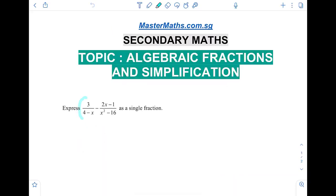Express 3 over 4 minus x, minus 2x minus 1 over x squared minus 16 as a single fraction. Now to start off we will need to factorize as much as we can, so the 3 here can't do anything to it, can't factorize.